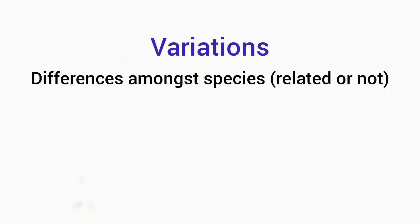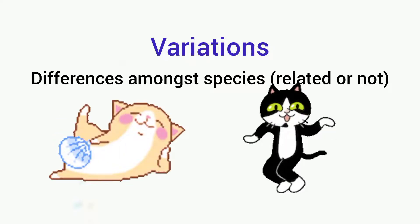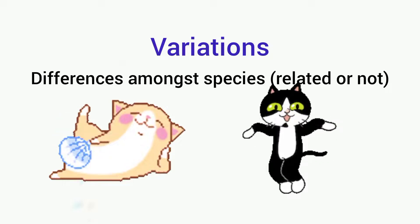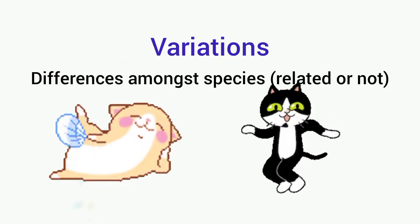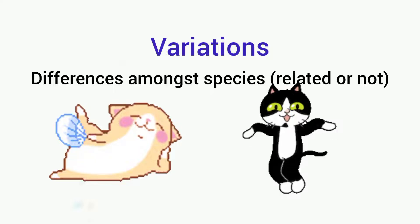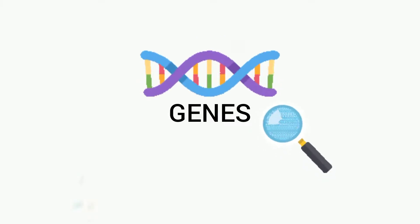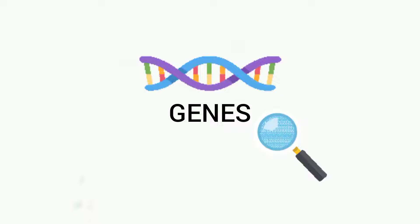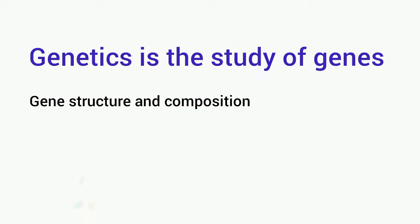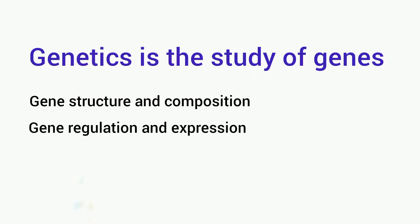Variations are basically the differences among species, whether they are related or not. You can see the variation between these two cats. Before scientists can understand what causes variations, they still need to understand and study the genes.